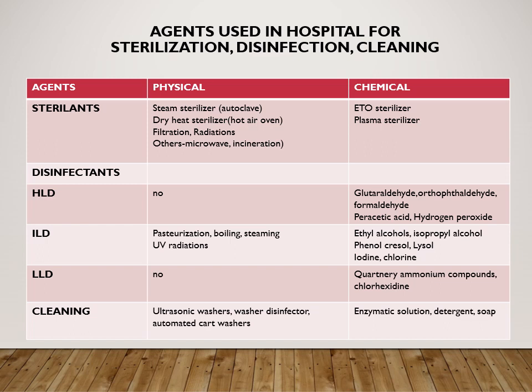Intermediate-level disinfectants include physical methods such as pasteurization, boiling, steaming, and UV radiation. Chemical intermediate-level disinfectants include ethyl alcohol, isopropyl alcohol, phenol, cresol, lysol, iodine, and chlorine. Low-level disinfectants are chemical only — quaternary ammonium compounds and chlorhexidine, which is commonly used in mouthwashes. Ethyl alcohol and isopropyl alcohol are very important groups to remember. For cleaning, ultrasonic washers, washer-disinfectors, automatic washers, enzymatic solutions, and detergents are used.